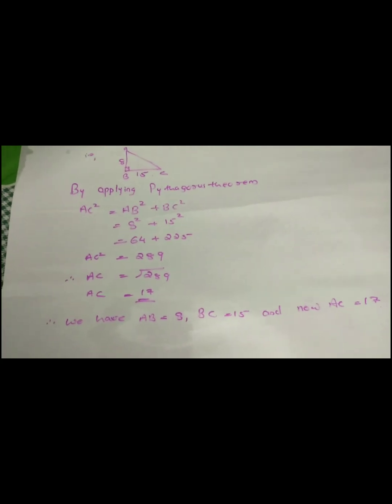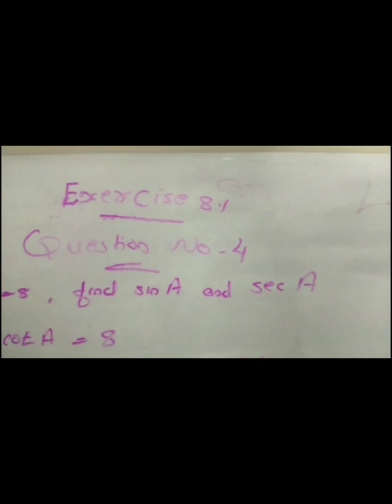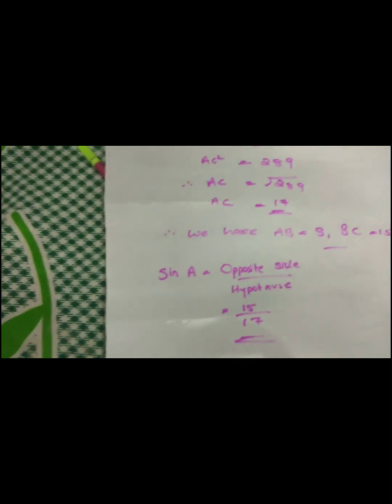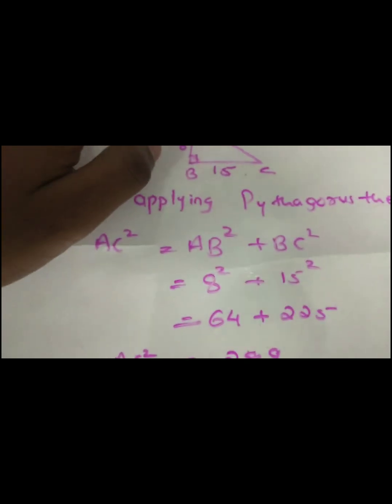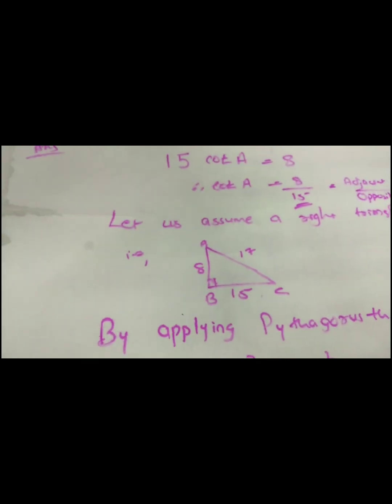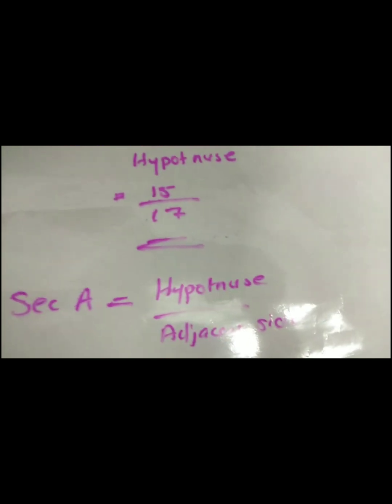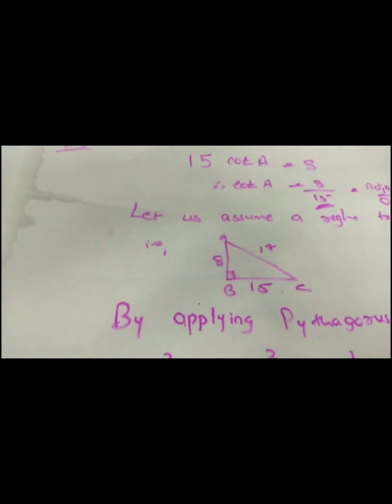We apply the formula for sin and cosec values. Sin A is equal to opposite side by hypotenuse. The opposite side is BC which is 15, and the hypotenuse AC is 17. So sin A equals 15 by 17.